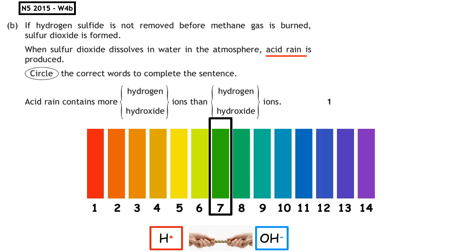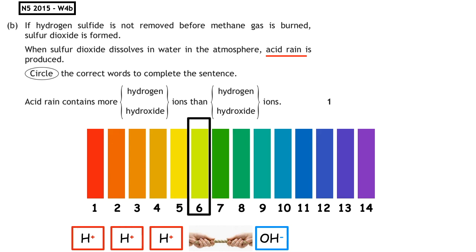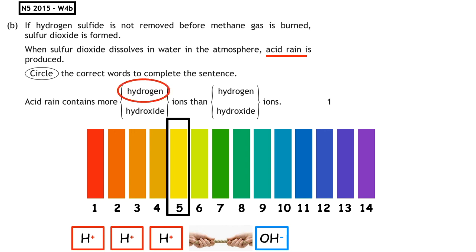This question is from the National 5, 2015, written paper, question B: 'If hydrogen sulfide is not removed before methane gas is burned, sulfur dioxide is formed. When sulfur dioxide dissolves in water in the atmosphere, acid rain is produced. Circle the correct words to complete the sentence: Acid rain contains...' An acid has a pH less than 7, meaning it has more H+ ions than OH- ions. So, acid rain contains more hydrogen ions than hydroxide ions.